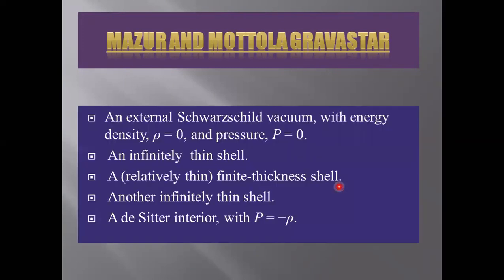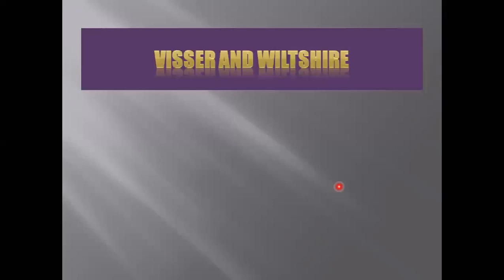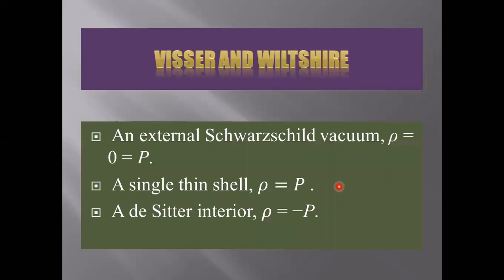Mazur and Mottola presented a five-layer onion-like structure of a gravastar with an exterior Schwarzschild vacuum, an infinitely thin shell, a finite thick shell. To dynamically study the gravitational stability, they presented a structure with an exterior Schwarzschild vacuum, a single thin shell, and a de Sitter interior.